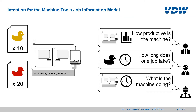The intention when designing the machine tools job model was mostly to get information from the machine tool about its current status related to the job. This data can then later be used to aggregate information. For example, the question 'how productive is the machine' would use aggregated data to calculate KPI values, or 'how long does one job take' is also calculated from aggregated data. The question 'what is the machine doing' refers to the current status on the machine tool.